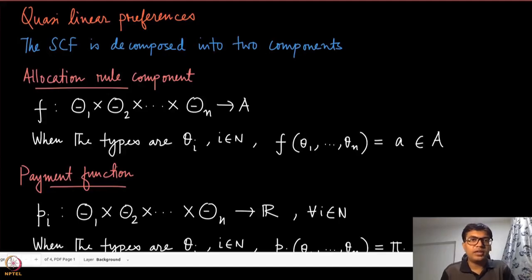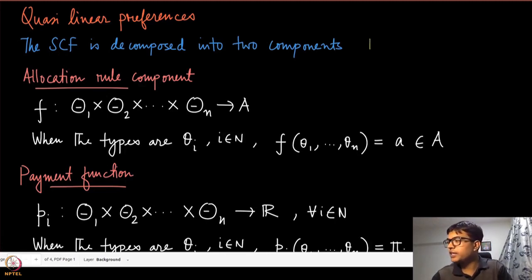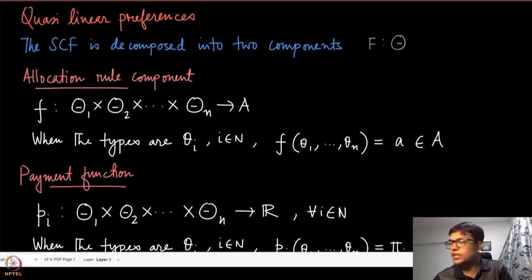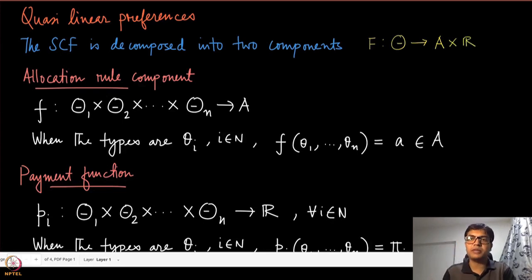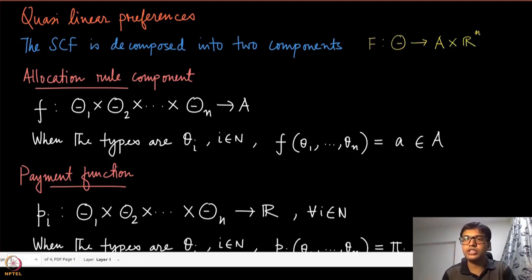In the quasi-linear domain, the social choice function can be decomposed into two components. The social choice function maps the Cartesian product of all type sets — the type profiles — into an outcome. An outcome has two components: the allocation component and the payment component. The allocation comes from the set A, and the payment comes from R^N, one for each of the players.